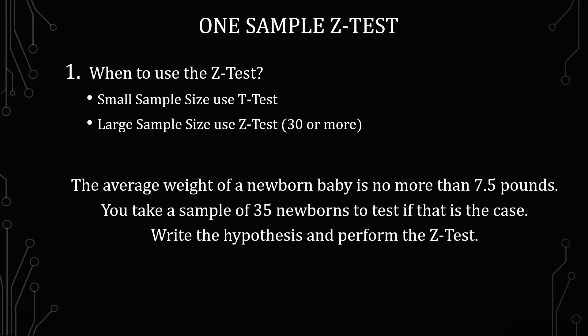Now the next part I want to do is actually walk through the example. The average weight of a newborn baby is no more than 7.5 pounds. You take a sample of 35 newborns to test if that is the case, write the hypothesis, and perform the z-test.